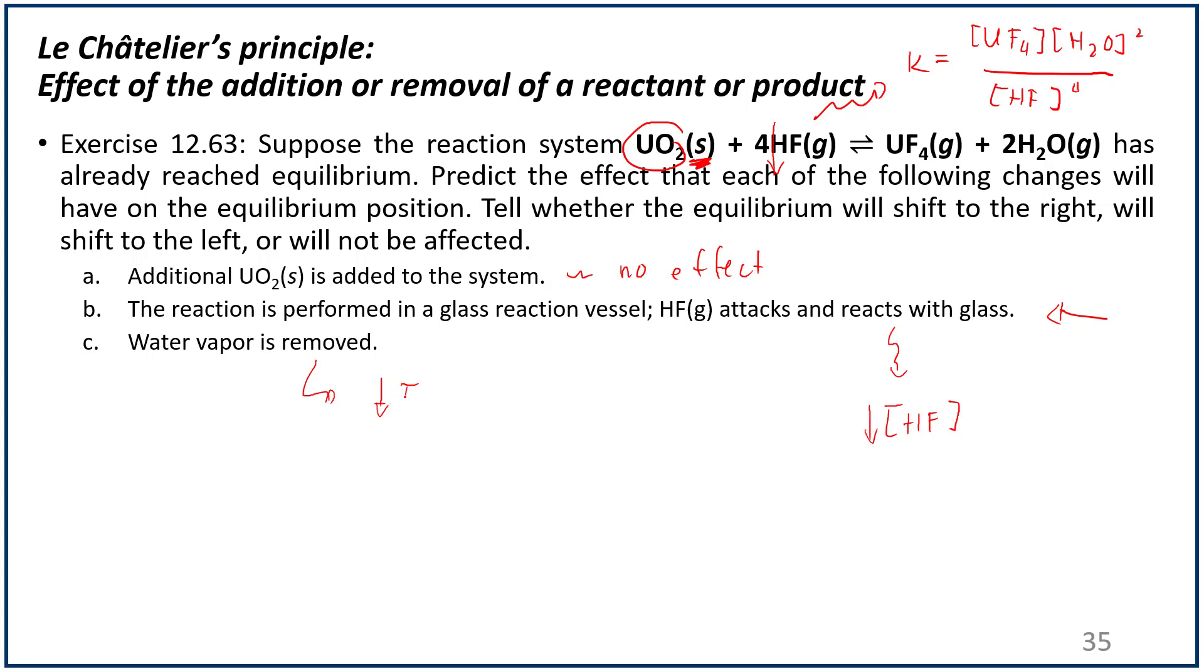And then water vapor is removed. For Kc, that's lower H2O. So this one should go down. If that one happens, then the reaction should shift to the right to replenish it.